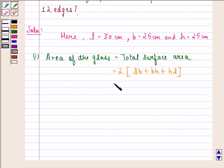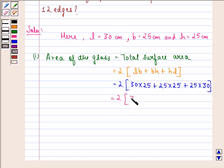We get twice of 30 into 25 plus 25 into 25 plus 25 into 30 which is equal to twice of 750 plus 625 plus 750. That is equal to twice of 2125. That is equal to 4250 cm square.